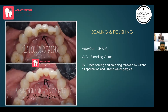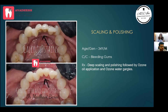Scaling and polishing is what perio means to most of us, but perio is way beyond that — beyond bleeding gums, bad breath, and pockets. This is a 34-year-old male with good oral hygiene but calculus at a common accumulation site. Deep scaling and polishing was done, followed by ozone oil application and ozone water gargles. To make ozone water, dip the ozone generator cannula into a glass of drinking water for about 60 seconds — the life of ozone water is 20 minutes, so it must be made and used chairside; it cannot be stored.